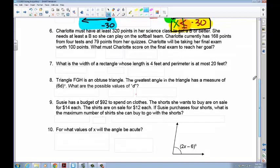Now let's look at number six. Charlotte must have at least 320 points in her science class to get a B or better. She needs at least a B so she can play on the softball team. Charlotte currently has 168 points from four tests and 79 points from her quizzes. Charlotte will be taking her final exam worth 100 points. What must Charlotte score on the final exam to reach her goal? So we know that we need to have at least 320 points. 320 is in our box. So we have to have at least 320 or more.